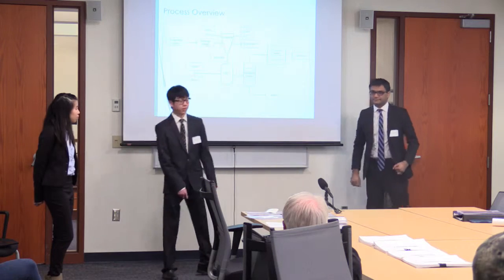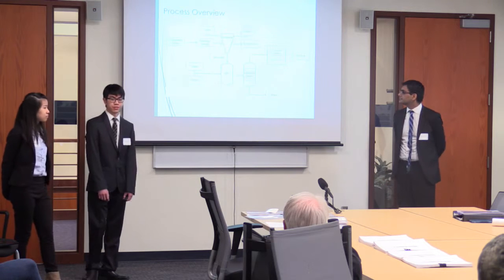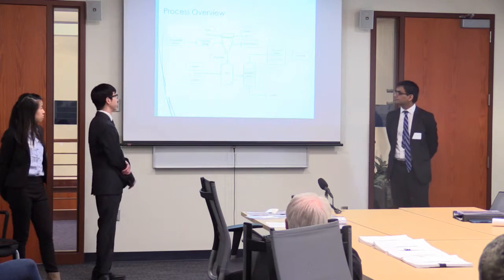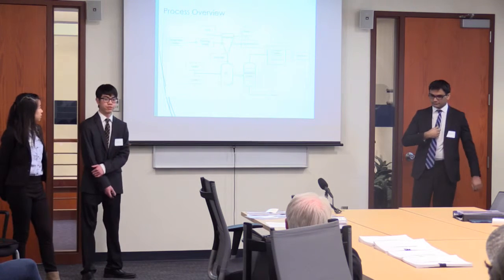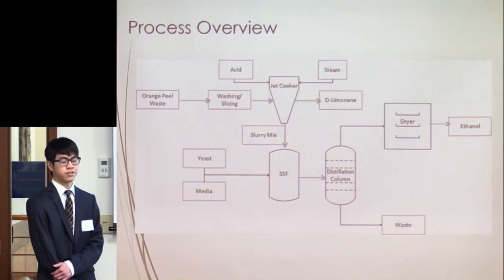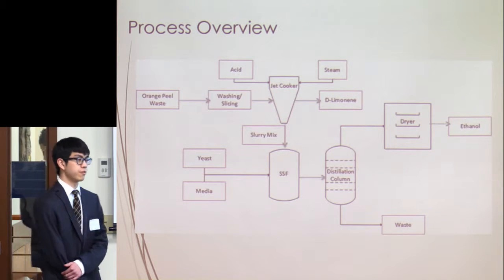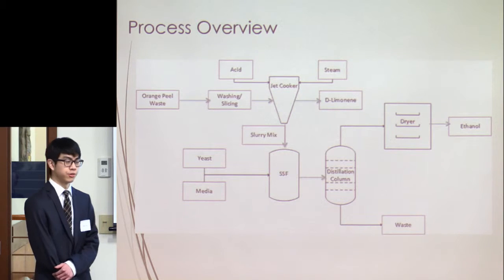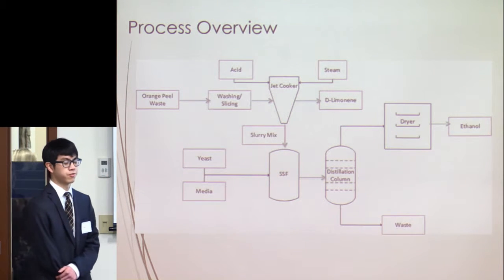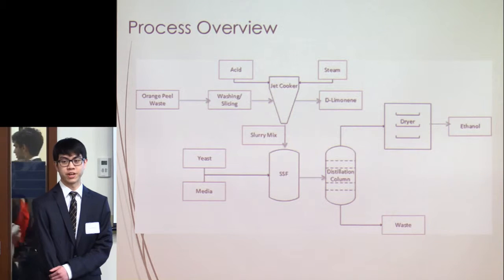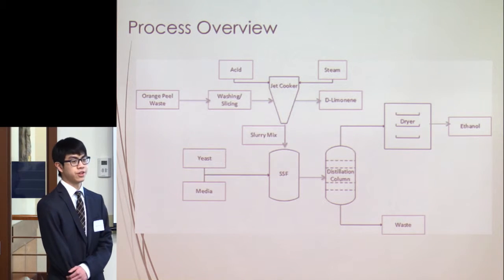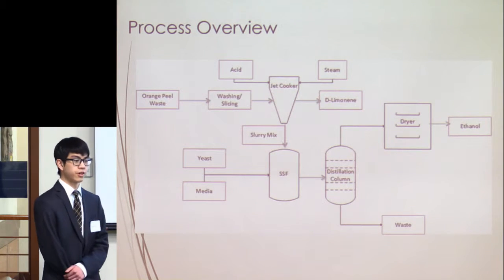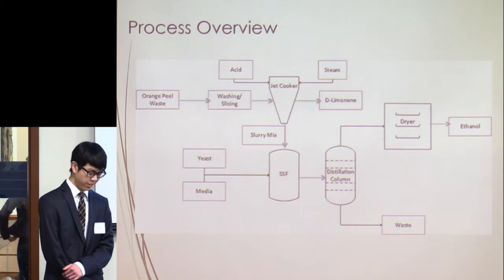Here's a quick overview of the process using a flow diagram. Orange peels are fed into a jet cooker for a pre-treatment step along with acid and steam. Coming out of that, we can isolate a byproduct — limonene. The rest of the material gets fed into a bioreactor where fermentation and the production of ethanol actually happens. Ethanol is then concentrated and purified through a distillation column, and then a dryer as our final purification step to yield fuel-grade ethanol.